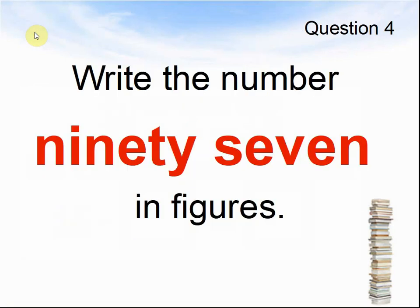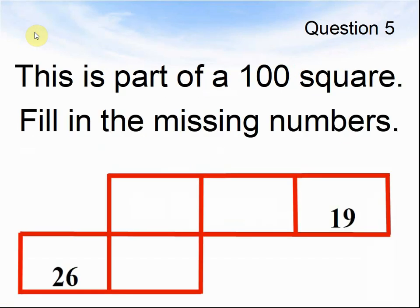Question 4. Write the number. Question 5. This is part of a hundred square. Fill in the missing numbers. I've given you 26 and 19 — what are the other numbers in those boxes? Pause the video to complete the question.